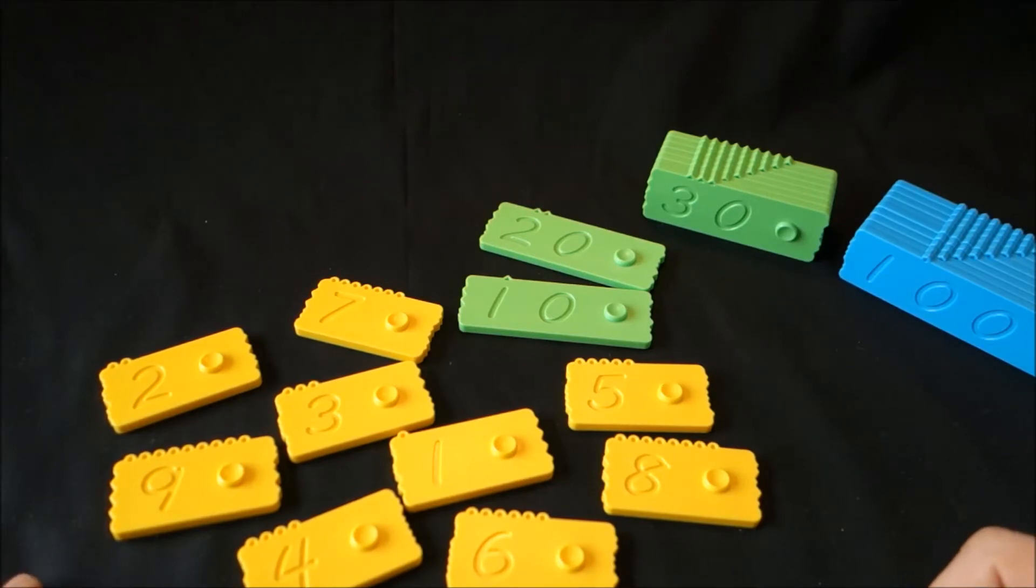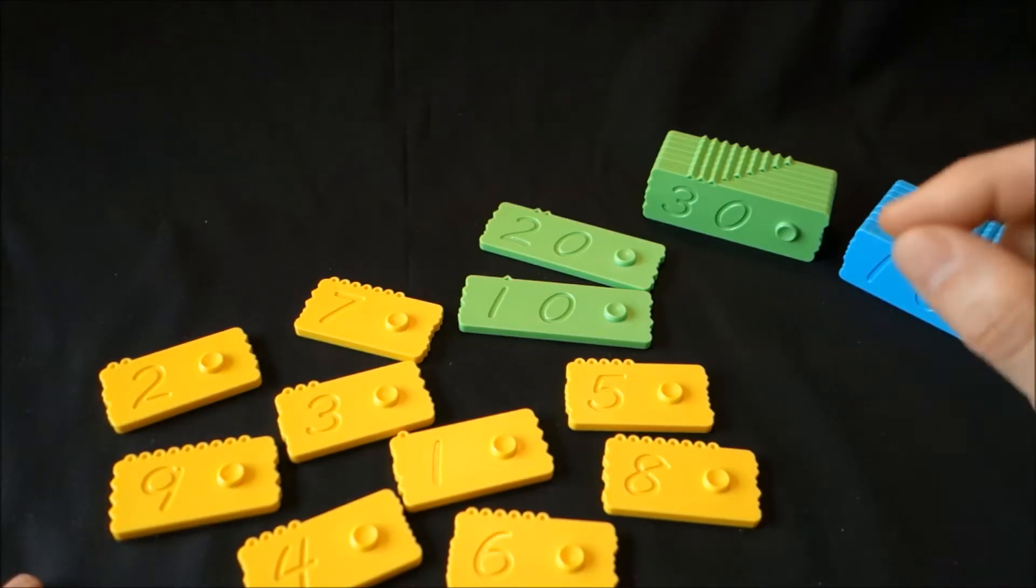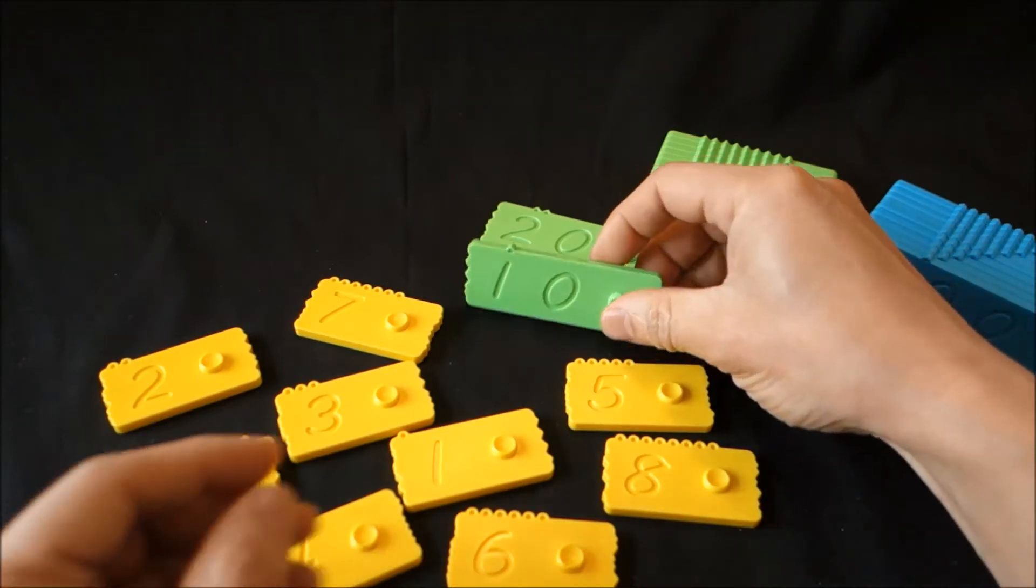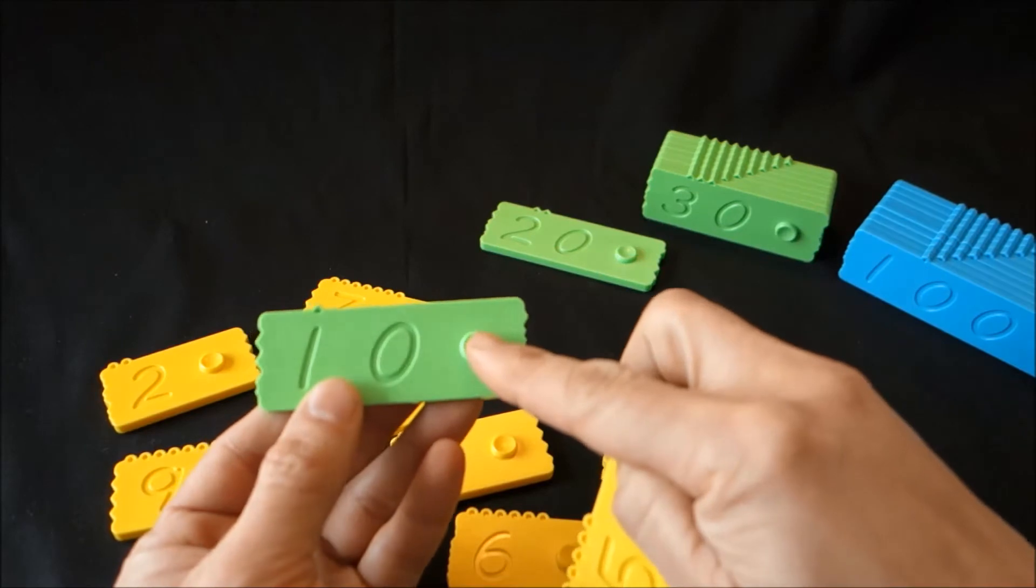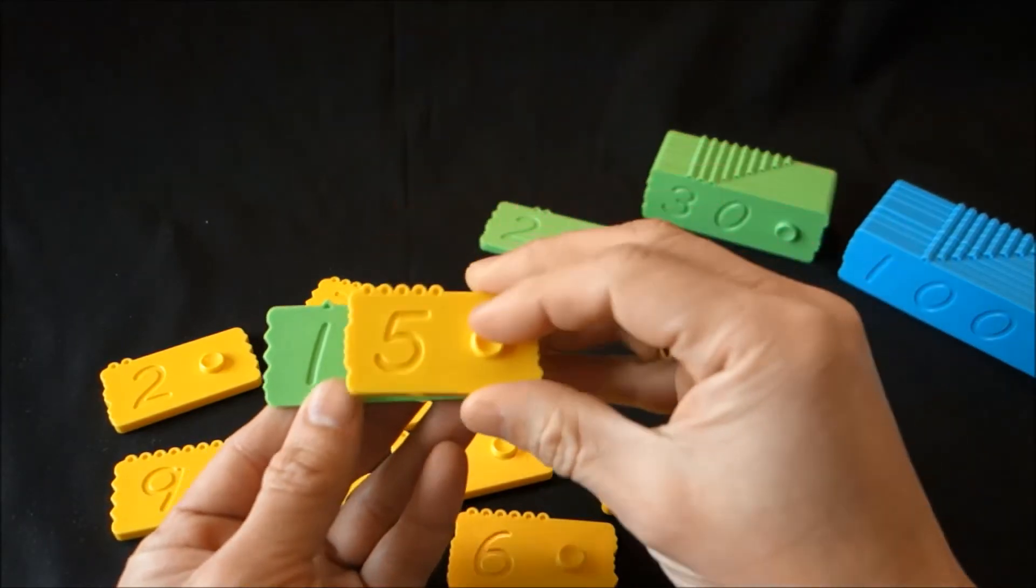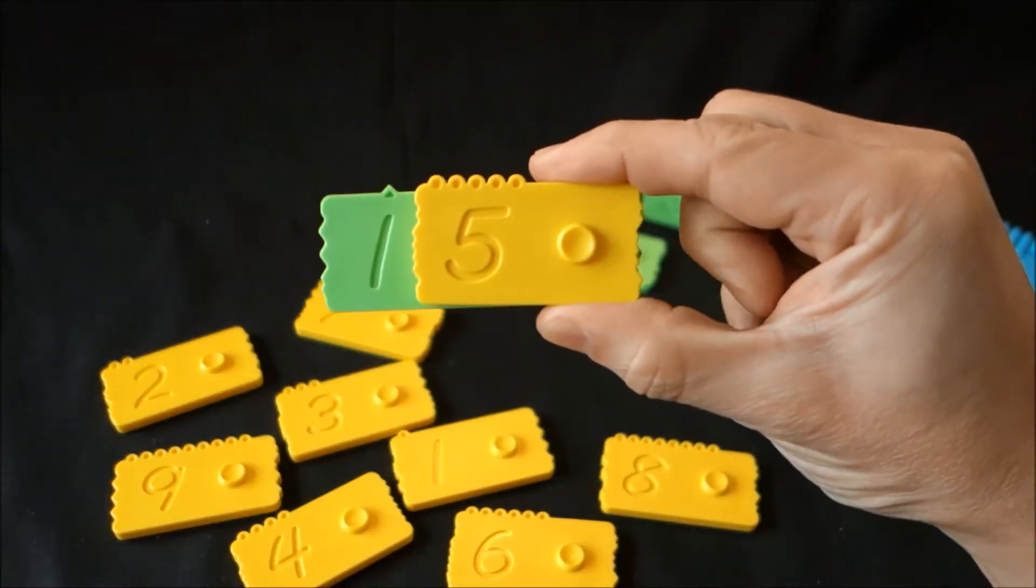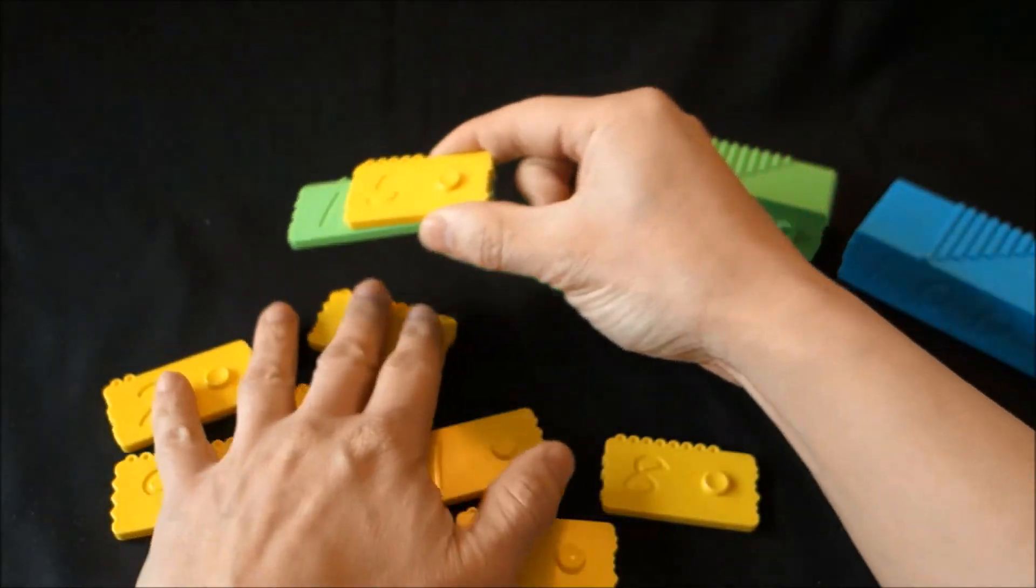Assuming that we asked the child, could you build number 15? The child will have to decode this, will have to take a 10 and a 5, and using the connector knob stack them on top of each other, building a house or staircase. So this is 15.